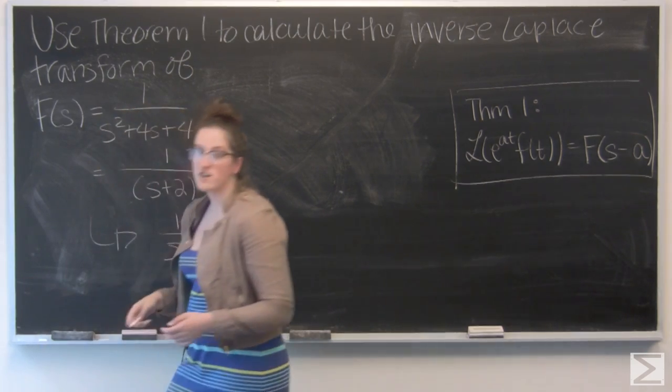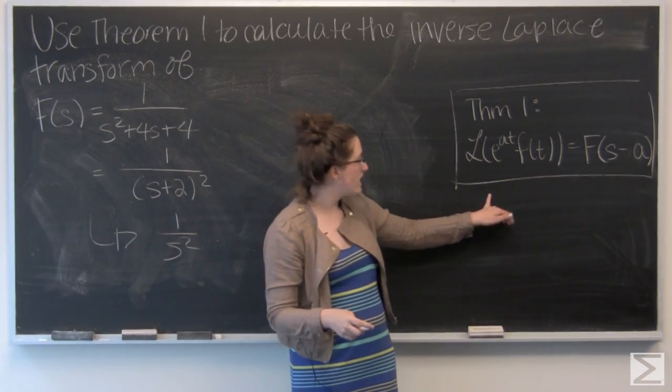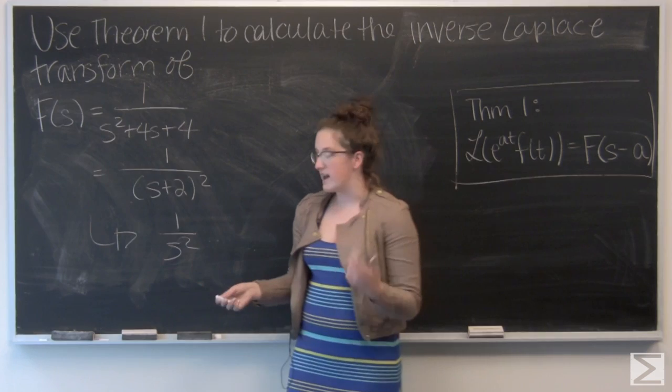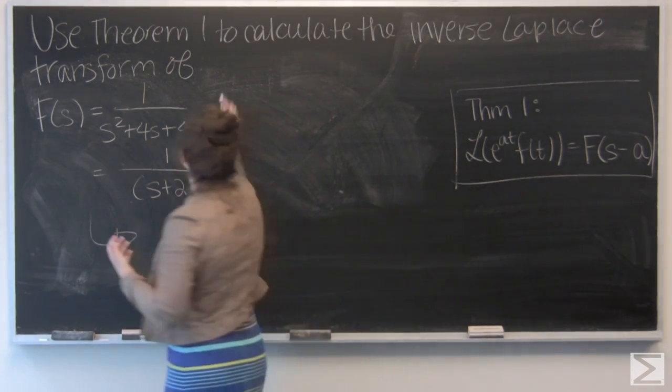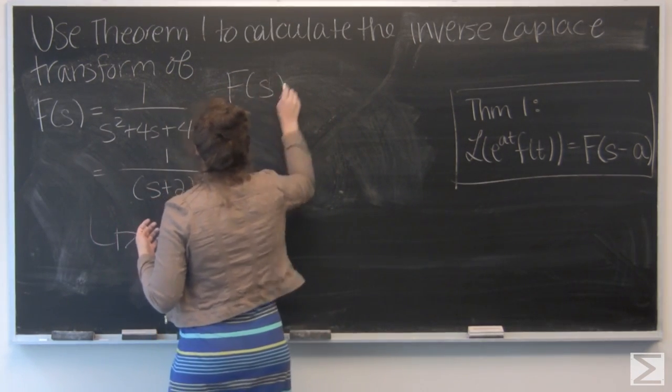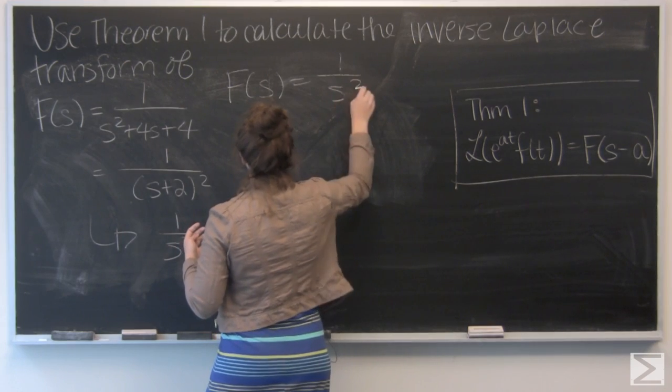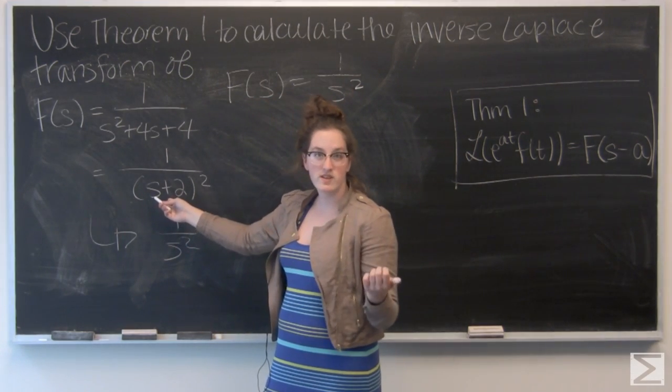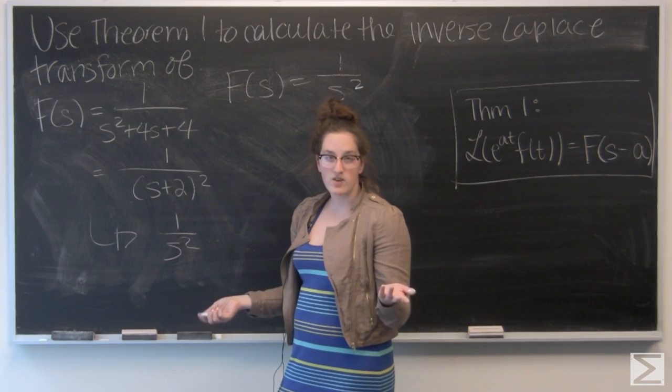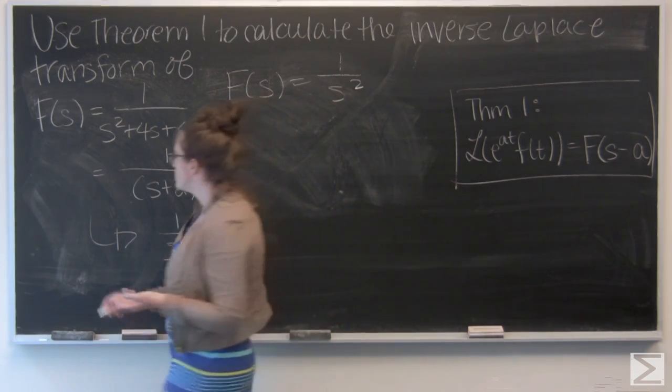And that shift tells me that I'm definitely working with theorem 1, and f(s) from there is 1/s². And since I'm shifting 2 units to the left, my a value is going to be negative 2.